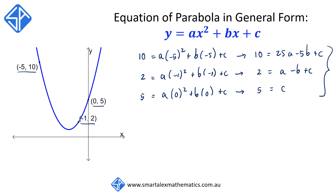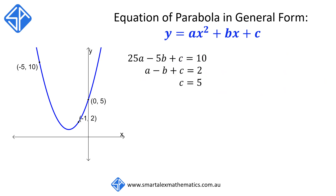So now that we've got three equations, we're going to have to solve this simultaneously. We now have the three simultaneous equations: 25a minus 5b plus c is equal to 10, a minus b plus c is equal to 2, and c is equal to 5. We start off by naming them equations 1, 2, and 3. We're going to substitute equation 3, c is equal to 5, into equations 1 and 2. This will help us eliminate the variable c.